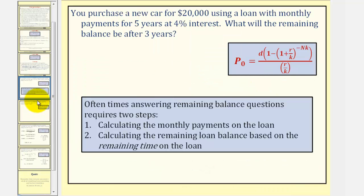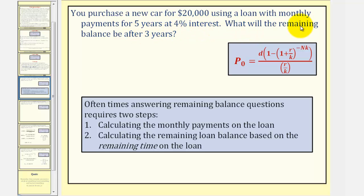Let's consider a car loan example. You purchase a new car for $20,000 using a loan with monthly payments for five years at 4% interest. What will the remaining balance be after three years?